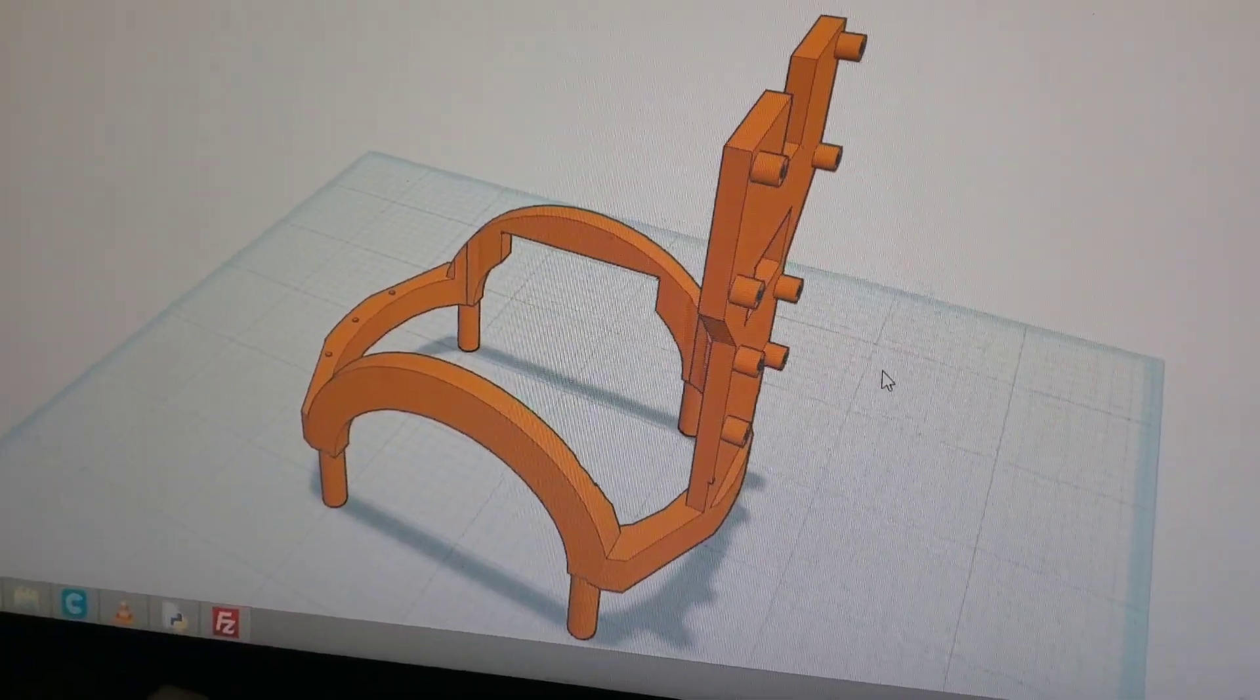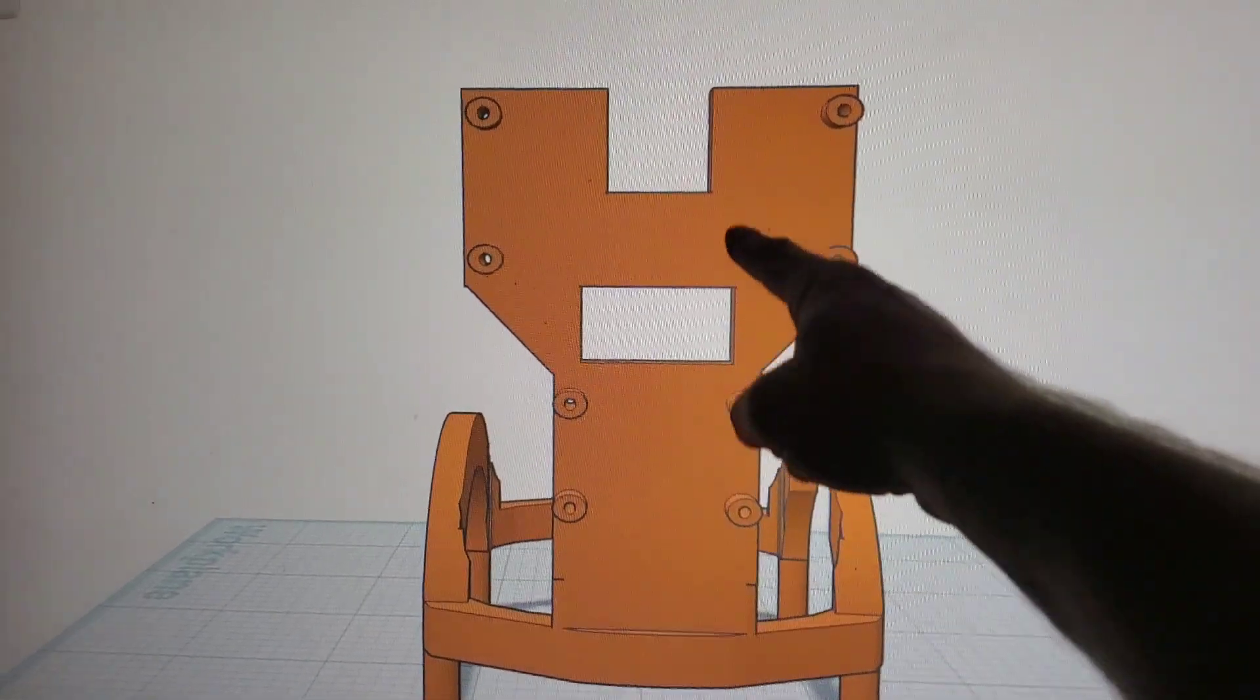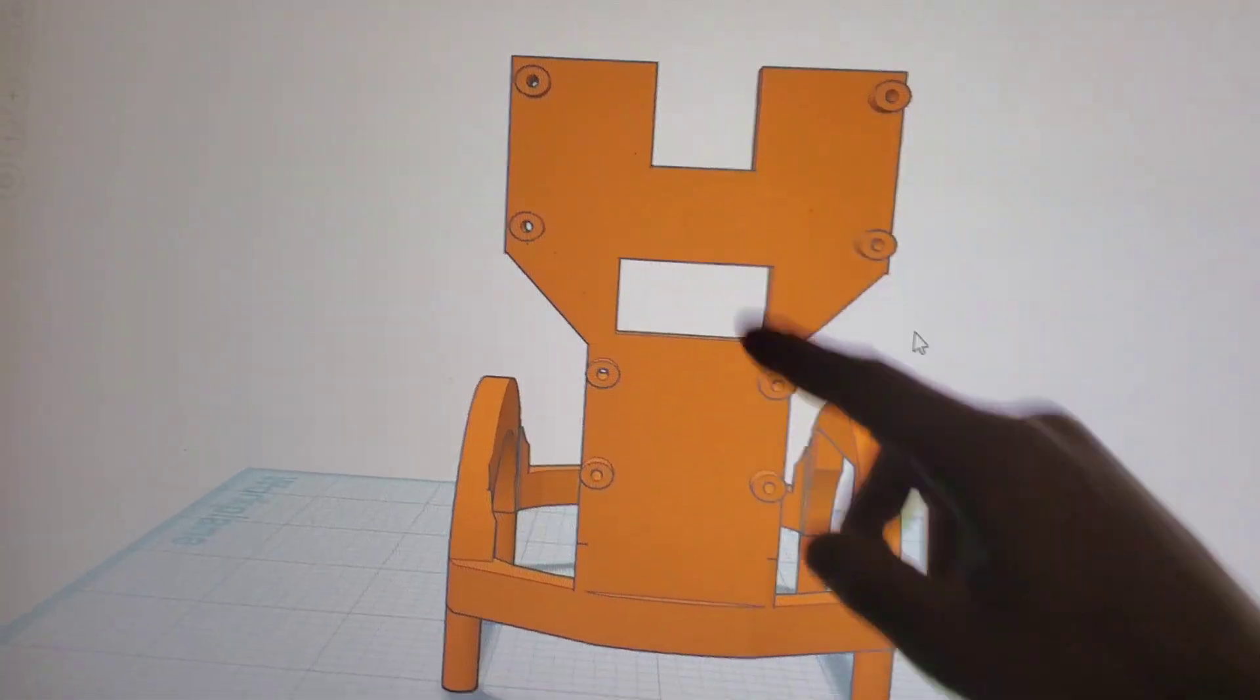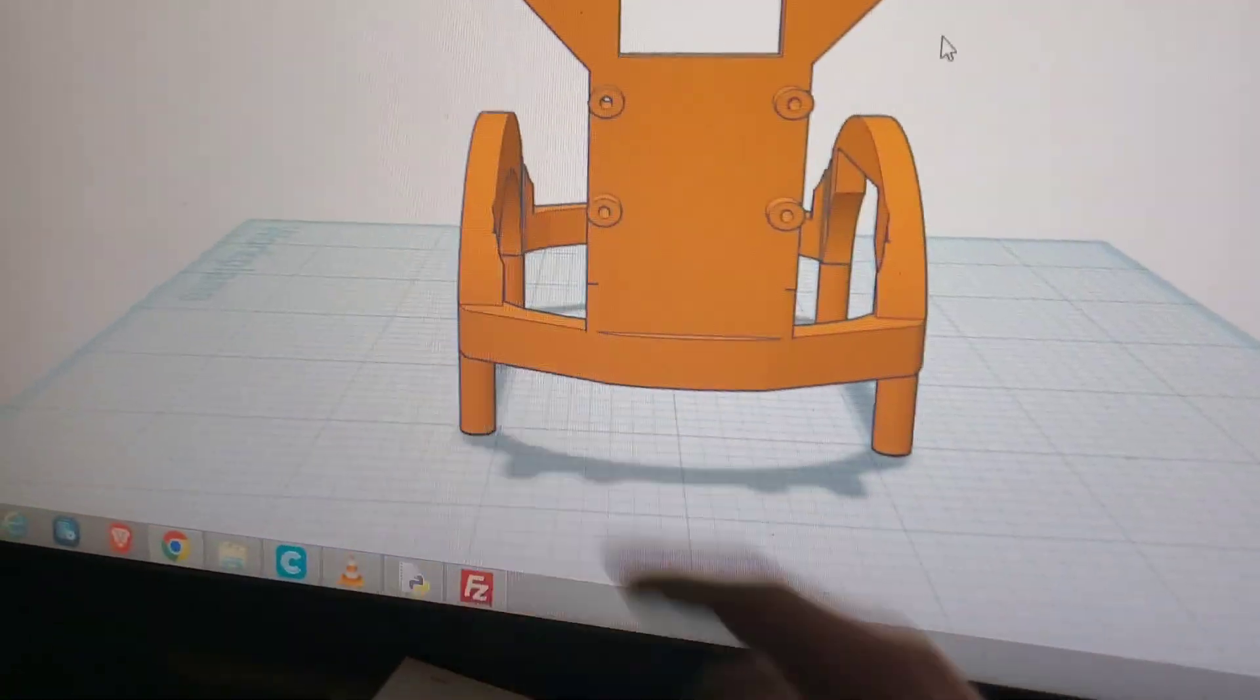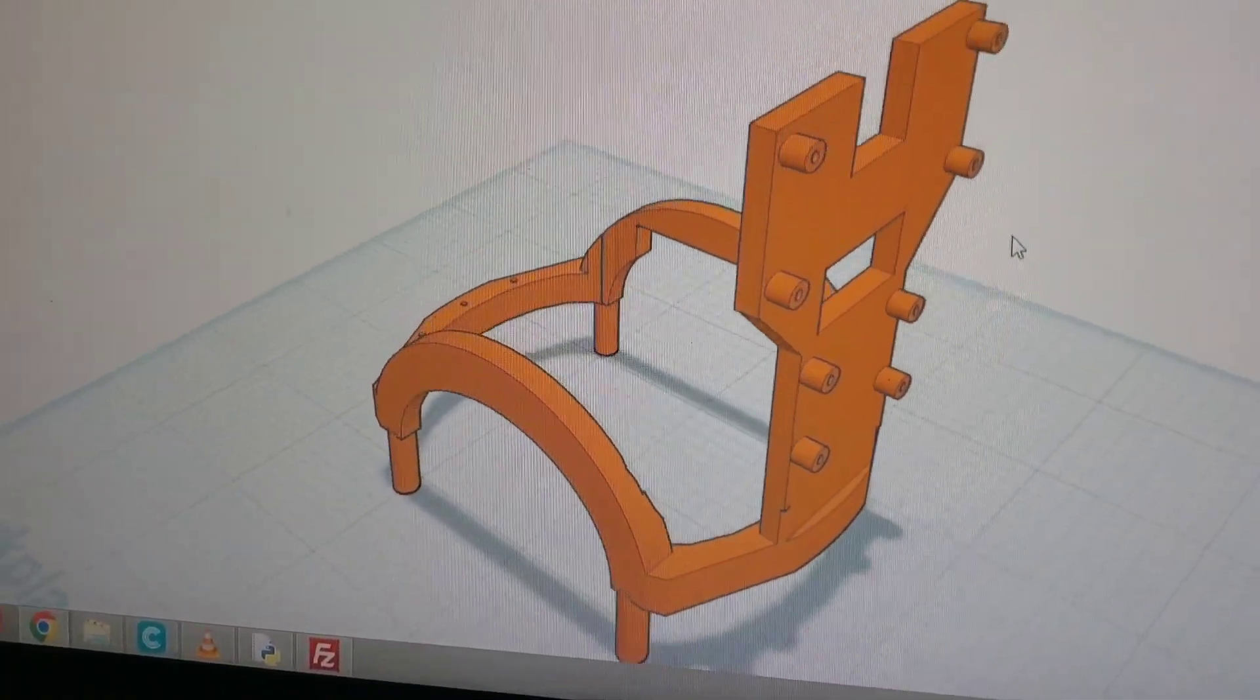And here's what we got. Got the camera holder right here, the ultrasonic sensor holder right here, and the legs that go down into those holes. So let's go get this printed.